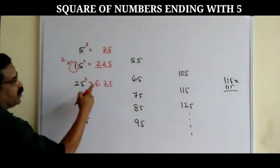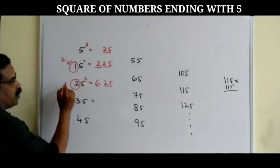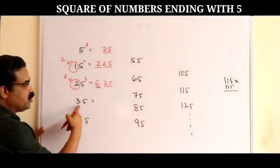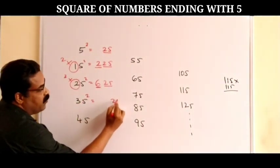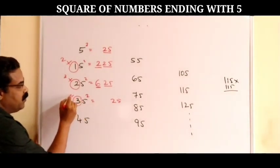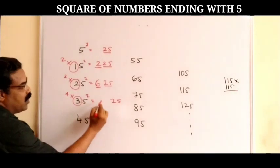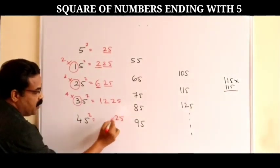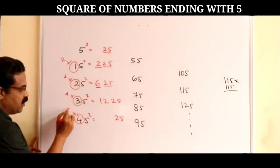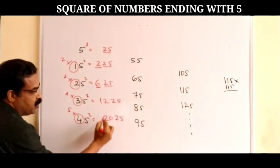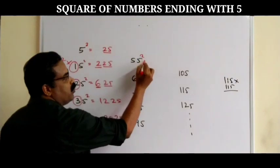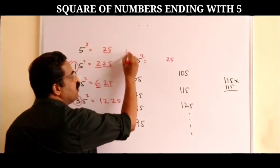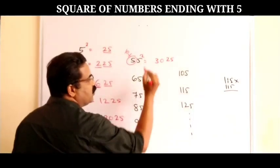For 25²: last two digits 25, and 2 × 3 = 6, so the answer is 625. For 35²: last two digits 25, and 3 × 4 = 12, so the answer is 1225. For 45²: last two digits 25, and 4 × 5 = 20, so the answer is 2025. For 55²: last two digits 25, and 5 × 6 = 30, so the answer is 3025.